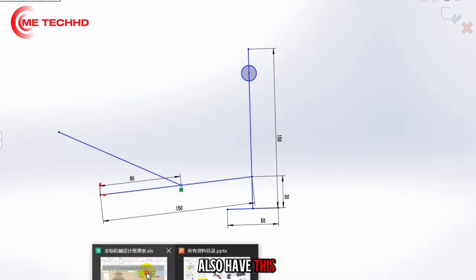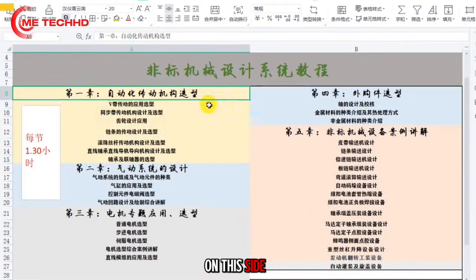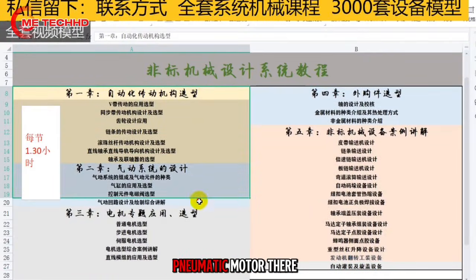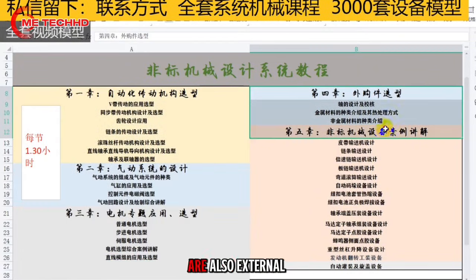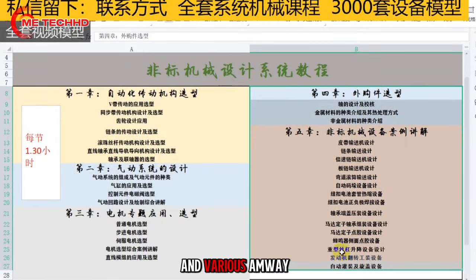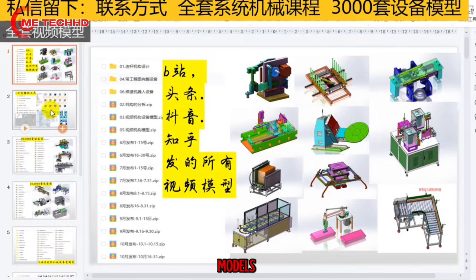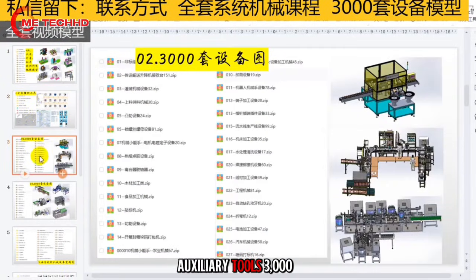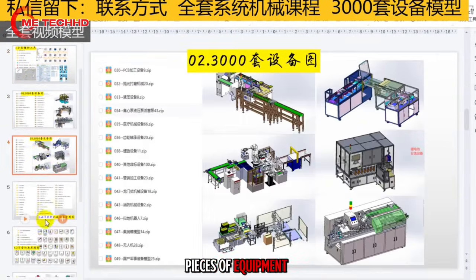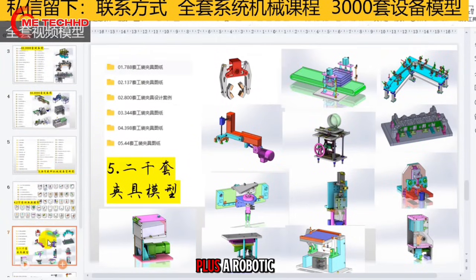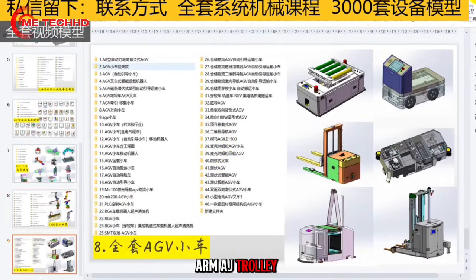So we also have this whole system on this side, including automated computing, pneumatic, motor, and external components and various Amway devices. You can do this design if you need it. This side has all kinds of information including video models, auxiliary tools, 3,000 pieces of equipment model animation, original magazines, and robotic arm AGV trolley.